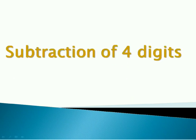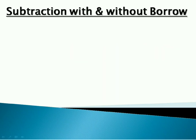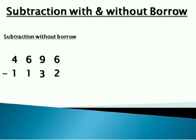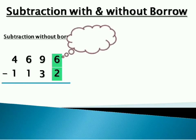So let's do subtraction of 4 digits, with borrow and without borrow. The first one is without borrow. 4696 minus 1132. Always start with the units place. 6 minus 2 is 4. 9 minus 3 is 6. 6 minus 1 is 5. 4 minus 1 is 3. Answer is 3564.